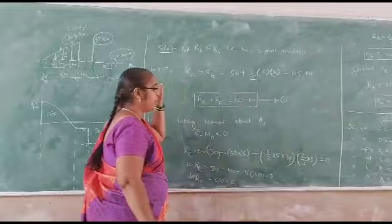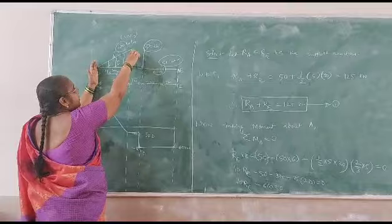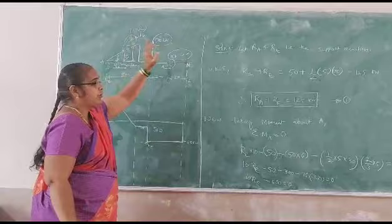Here, the base is 5 meter. The intensity of the load is 30 kilonewton per meter. So it is half into base 5 into 30.